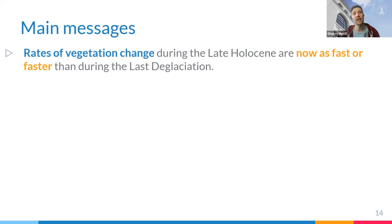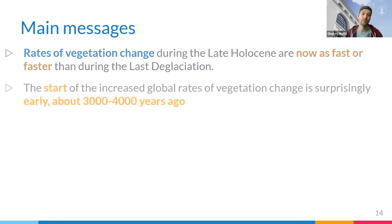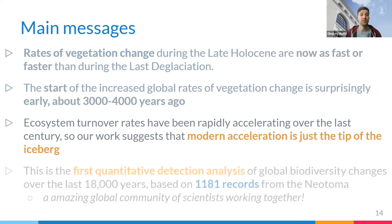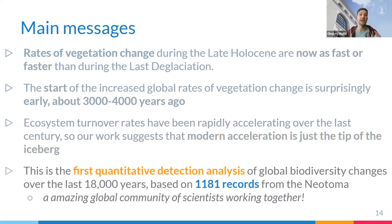To sum things up: the main messages are that rates of vegetation change today are as fast or faster than anything we saw since the LGM, and this is true for all continents. These changes start surprisingly early — already three or four thousand years ago. What we observe today in neontological studies — changes in beta diversity and turnover — is just the tip of the iceberg of changes that started quite a long time ago. This is a great example of what people can achieve using open data: the first quantitative study of over 1,000 records on global biodiversity change. I'd like to thank all data contributors and especially the data stewards doing an amazing job, and the Neotoma team.